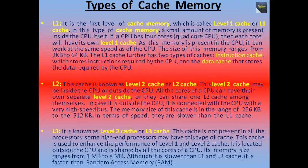The last type is L3, known as level 3 cache. This cache is not present in all processors — only some high-end processors may have it. This cache is used to enhance the performance of level 1 and level 2 cache. It is located outside the CPU and is shared by all the cores. Its memory size ranges from 1 MB to 8 MB. Although it is slower than L1 and L2 cache, it is faster than RAM.